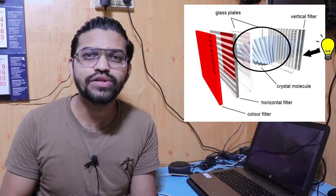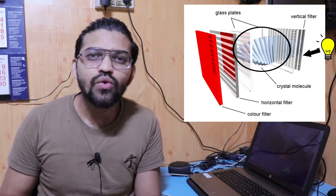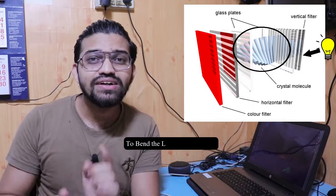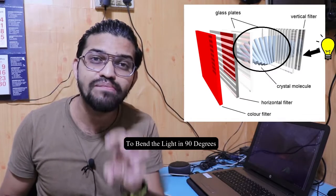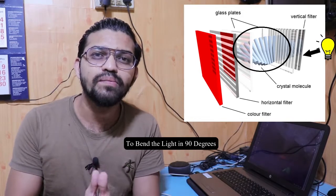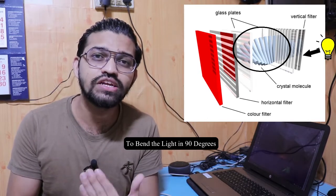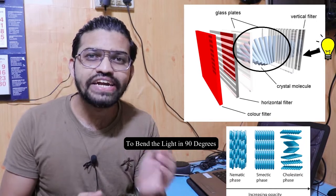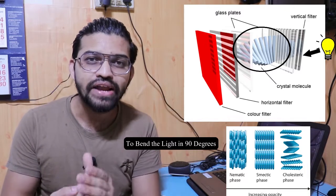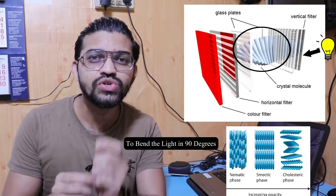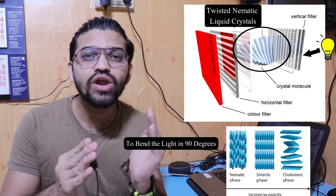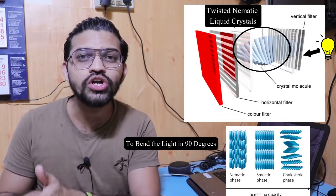The vertical light then passes through the main essential component of the LCD — the liquid crystals. Liquid crystals come in three types, or phases: the nematic phase, the smectic phase, and the cholesteric phase. The main property of liquid crystals is to bend light by 90 degrees. In conventional LCD panels, twisted nematic liquid crystals are used, which bend the vertical polarized light 90 degrees into the horizontal orientation.